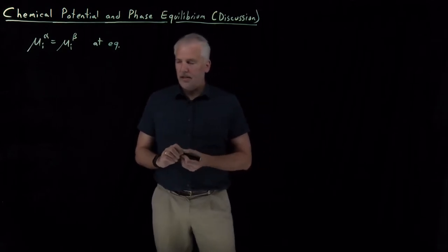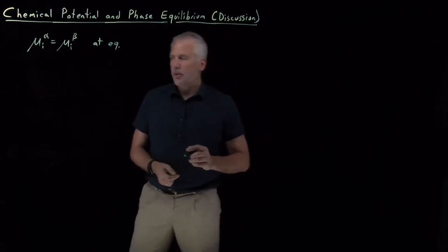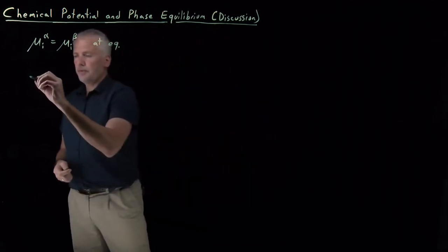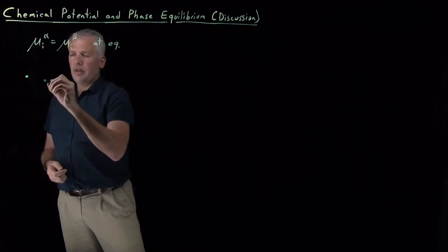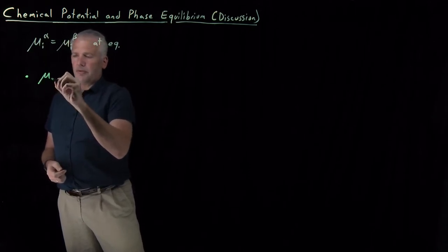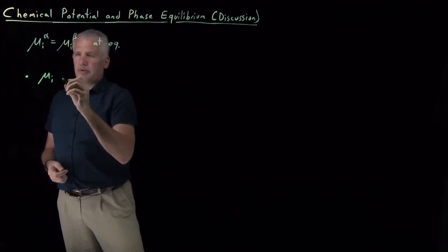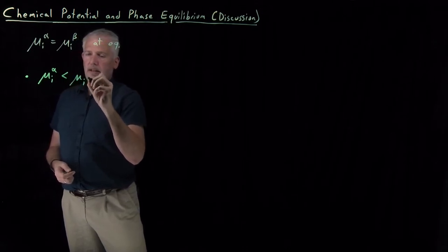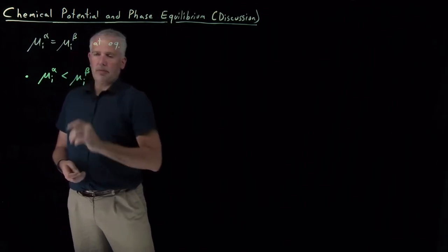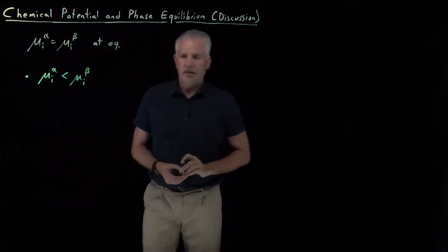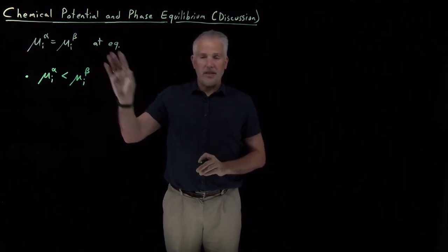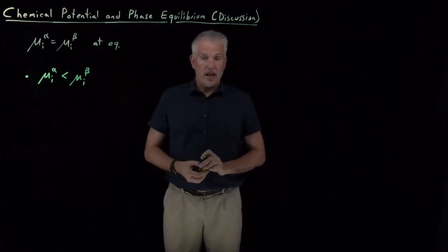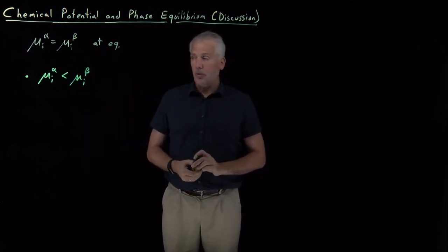That has a number of important consequences. Suppose this is not true — suppose the chemical potential in some phase is less than the chemical potential in some different phase. Clearly, what this means is that the system is not at equilibrium, but what does that mean?